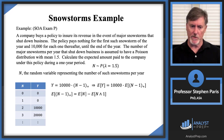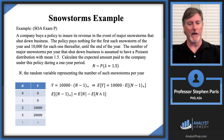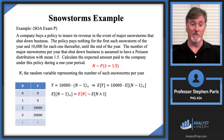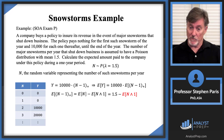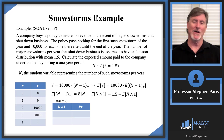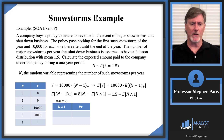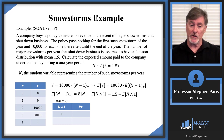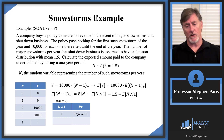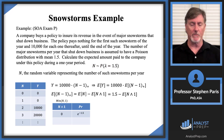From the policy modifications learning video, E[(N − 1)+] equals E[N] minus E[N∧1], where N∧1 is the minimum of N and 1. E[N] is simply the Poisson parameter, 1.5. Now I need E[N∧1]. Looking at the support of N: if N is 0, the minimum of N and 1 is 0, so N∧1 equals 0 with probability e^(−1.5).